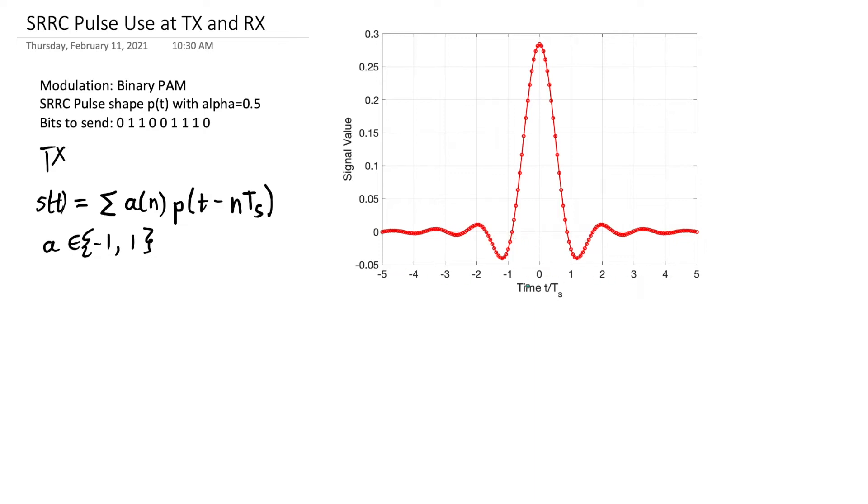The square root raised cosine shape, you can see it plotted here. This value here at time delay, the time delay on the x-axis divided by the symbol period. So this 1 really means T sub s in time. This 2 really means 2 T sub s in time. Note that the value of the square root raised cosine pulse shape is not equal to 0. It's equal to some negative value here and at time 2, it's equal to some positive value.